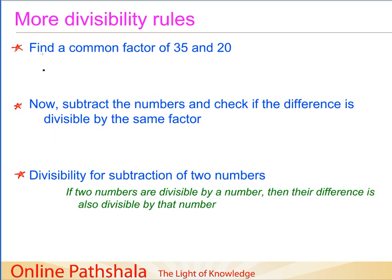Finally, let us discuss the last rule. We find a common factor of 35 and 20 — the number 5 comes to mind straightaway. Now, instead of adding, we subtract the numbers. Subtracting 20 from 35 gives a difference of 15. Is 5 a factor of 15? Yes, it is.